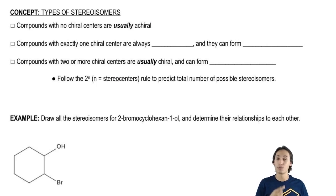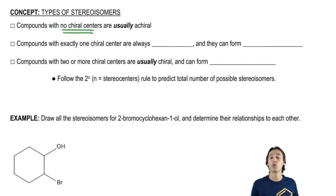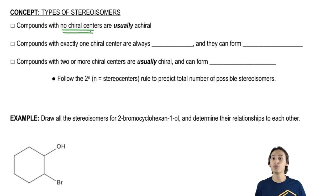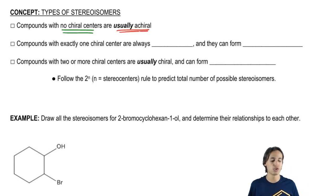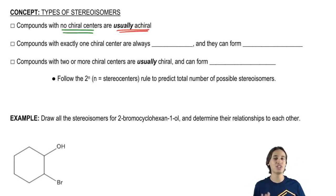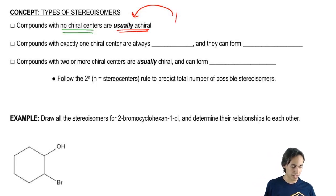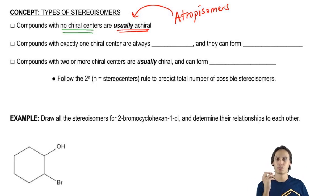Let's talk about the most simple situation: what if you have a compound with no chiral centers? Earlier I told you that if there's no chiral centers, assume that it's achiral — and that's still going to hold. Compounds with no chiral centers are usually achiral. But notice I put the word 'usually' in there, because there is a subset of weird molecules called atropisomers that we're going to pay special attention to later.